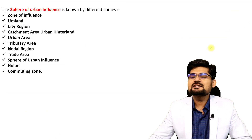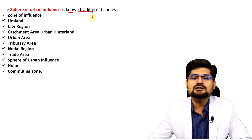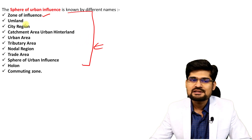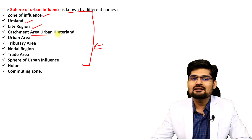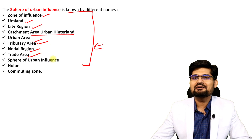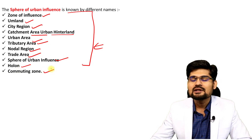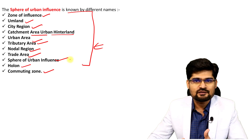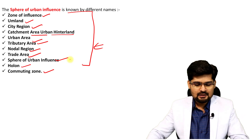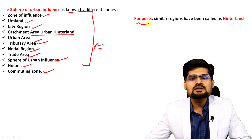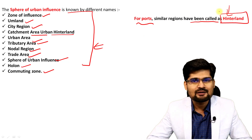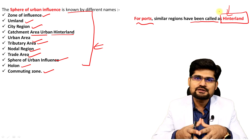The sphere of urban influence has several interchangeable terms: zone of influence, umland, city region, catchment area, urban hinterland, urban area, tributary area, nodal region, trade area, sphere of urban influence, holon, commuting zone, and commuter zone. For ports, similar regions were called hinterland, and later this term was used interchangeably with umland and zone of influence as well.